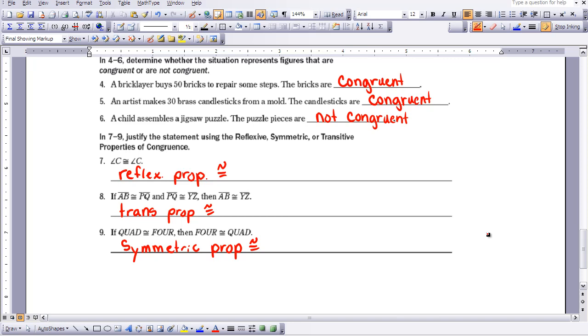Look at number 8. If AB is congruent to PQ and PQ is congruent to YZ, since PQ is congruent to both AB and YZ, then it would make sense that AB is congruent to YZ. That's the transitive property of congruence.